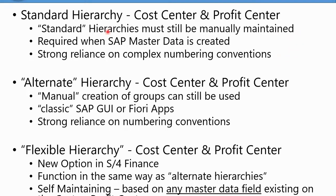The standard hierarchies have to contain every single cost center or profit center. Then we have the concept of the alternate hierarchy. For cost centers and profit centers, you're always able to manually create your own groups, and that can still be used in the system. You can use classic SAP GUI or there are also Fiori apps to create these alternate hierarchies or groups. There tends to be a strong reliance on numbering conventions in order to easily create these groups, or they can be manually assembled.